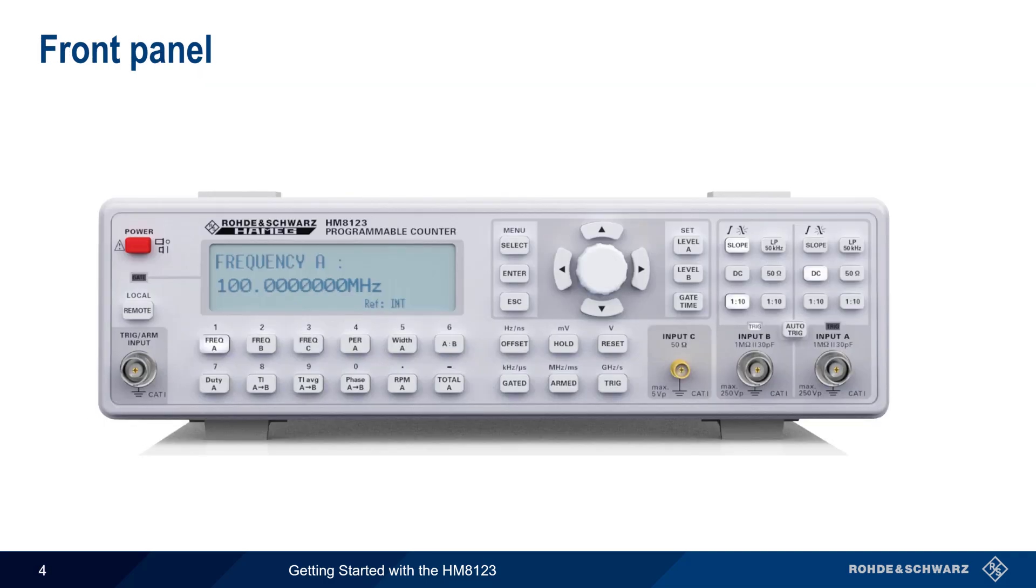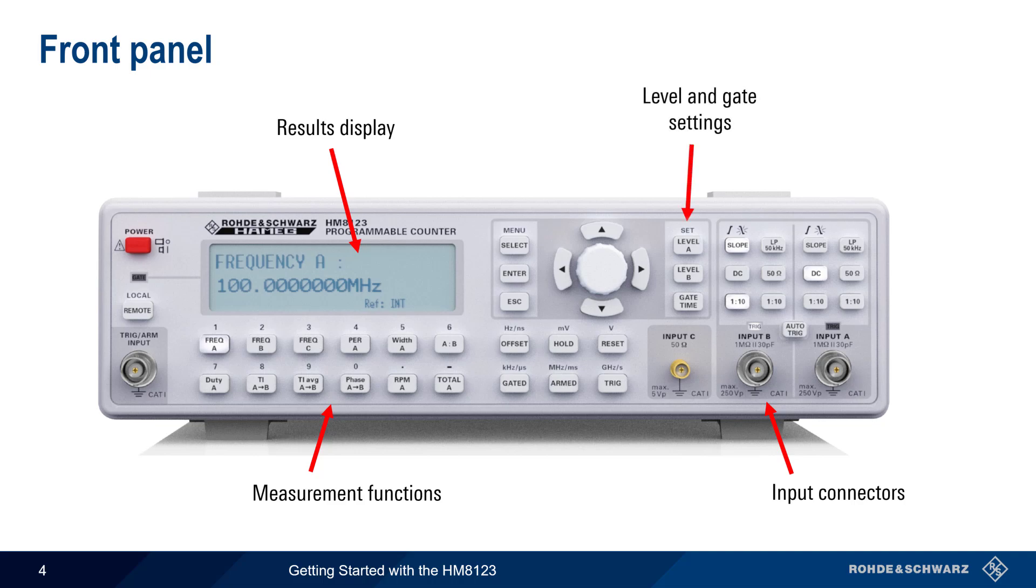Let's start by looking at the most important front panel buttons and connectors. The three input connectors are on the bottom right, and measurement results are displayed on the top left, just above the measurement function keys. The keys for both level and gate settings, as well as for input controls such as attenuation, filtering, and coupling, are found above the input connectors. The measurement controls can be used to pause or reset measurements, and they're also used with the front panel trigger-in connector.